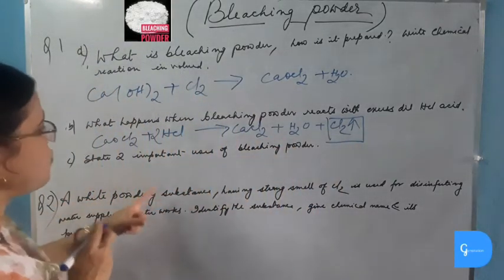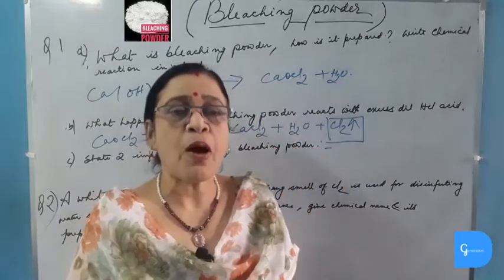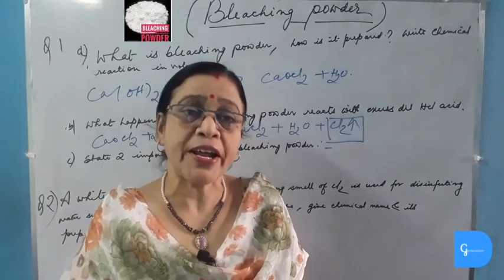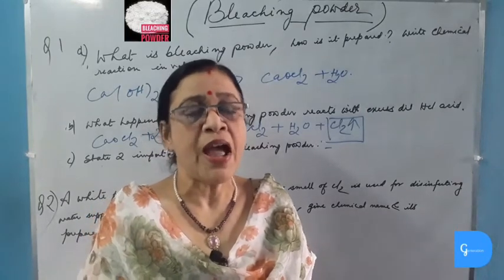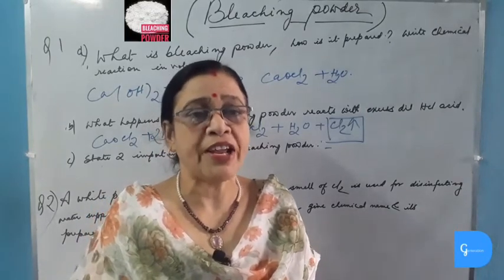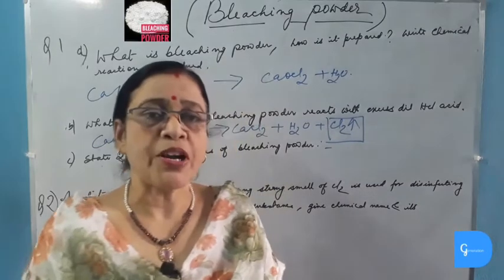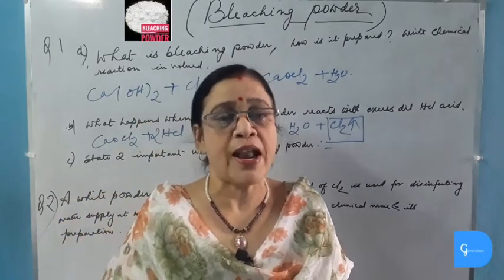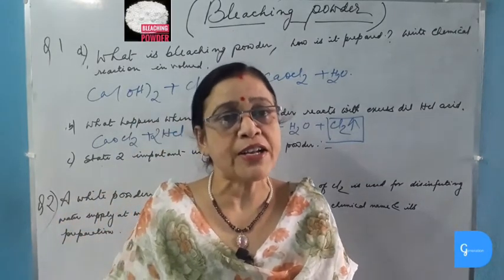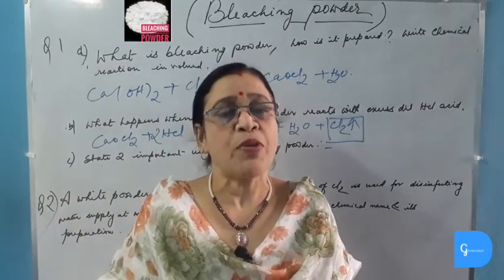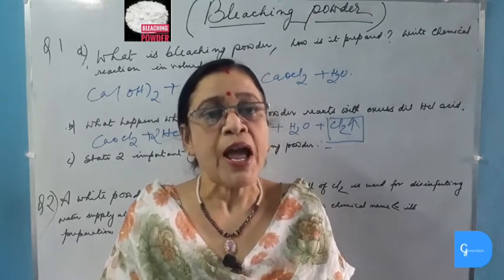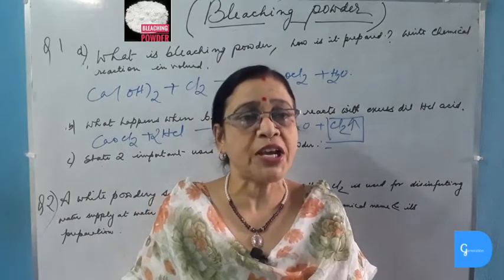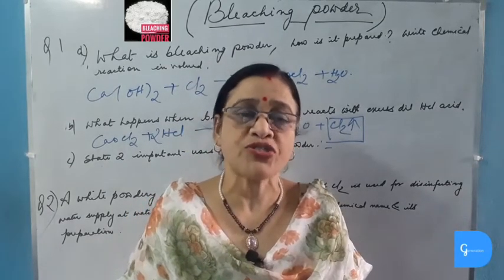State two important uses of bleaching powder. Bleaching powder is used for disinfecting drinking water supply and making the drinking water germ-free. Bleaching powder is used for bleaching cotton and linen in the textile industry, for bleaching wood pulp in the paper industry, and also for bleaching laundry-washed clothes.